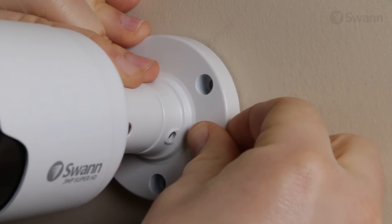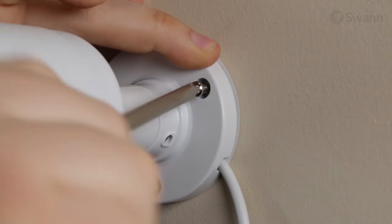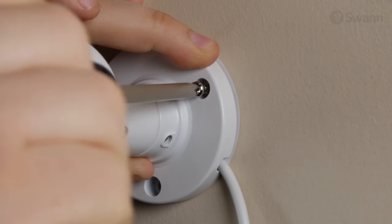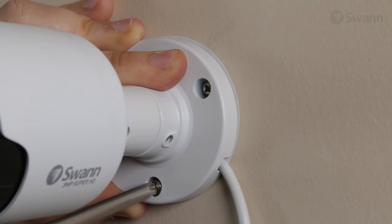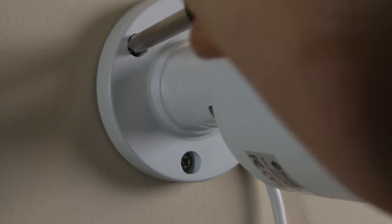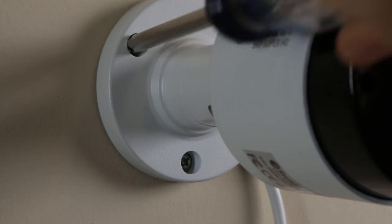Now, align the camera and secure it using the supplied screws into the holes in the camera mounting base and into the wall plugs or anchors you just installed. Tighten the screws with a Phillips-head screwdriver, but take care not to over-tighten them.